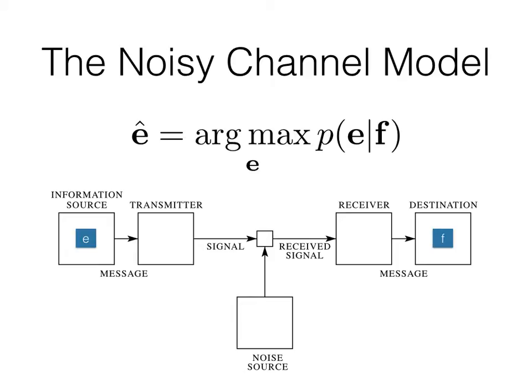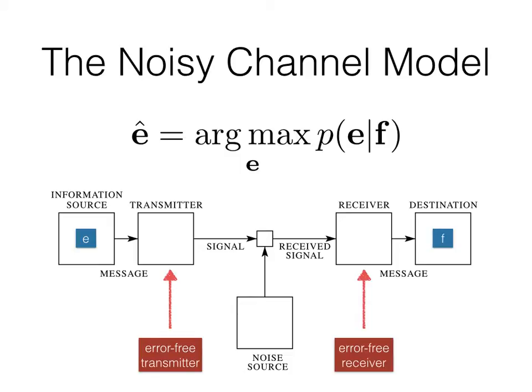So, how can we use the noisy channel model to find this best hypothesis? Let's start with a couple of simplifying assumptions. To begin with, we're going to assume an error-free transmitter. We're also going to assume an error-free receiver. At the transmitter, this means we have a highly skilled telegraph operator who encodes our English message into Morse code without making any mistakes. Likewise, at the receiver, this means a highly skilled telegraph operator who decodes Morse code back into English without making any mistakes.